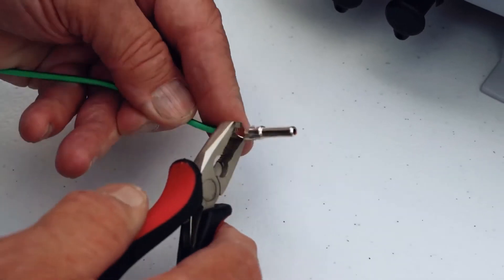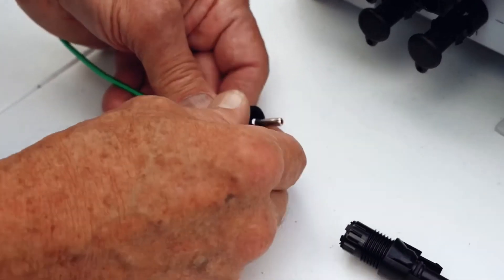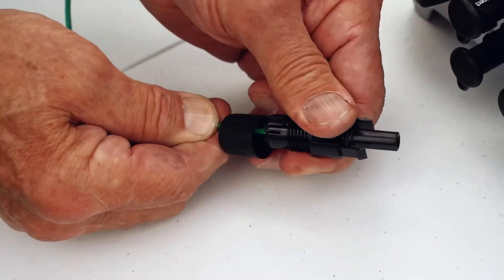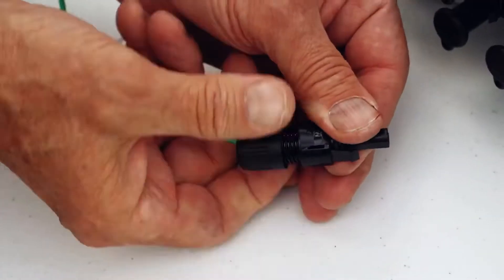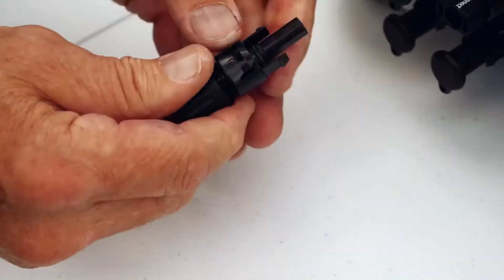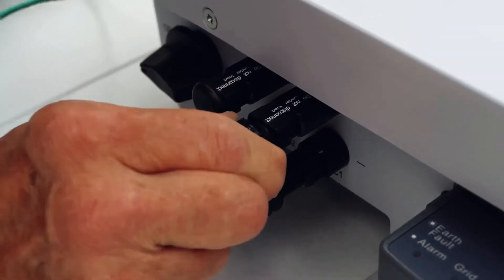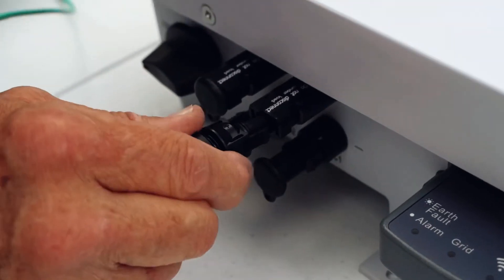Attach the other end to your battery, or if connecting to an inverter, make the connections as required for your particular inverter. This inverter requires its own sleeve to make connections. Yours could be different. Please refer to your manual.